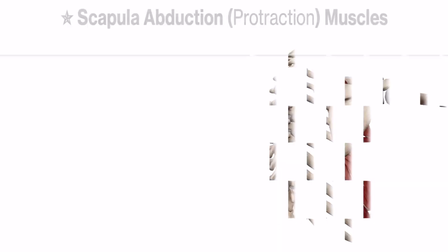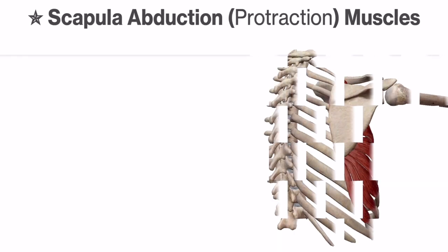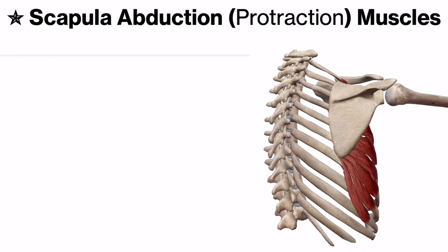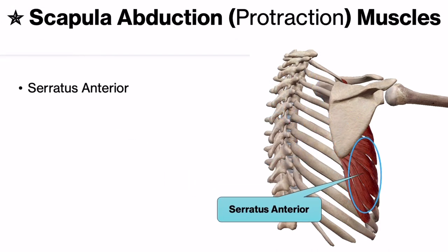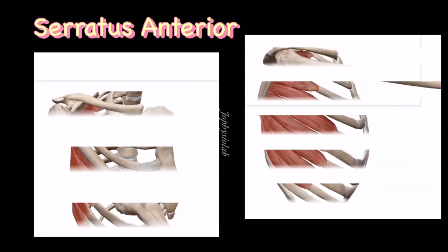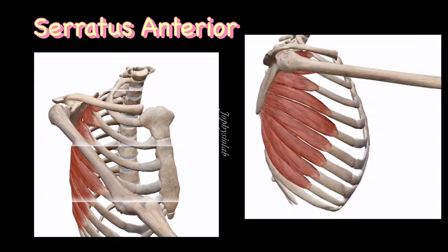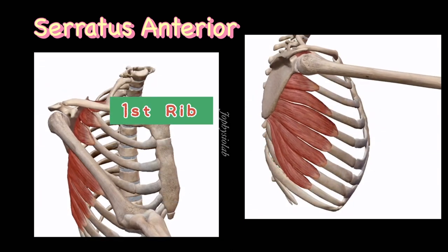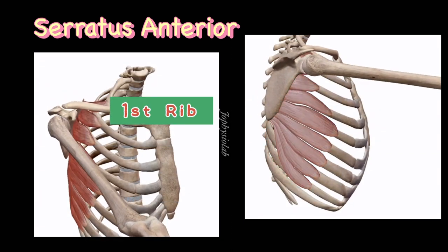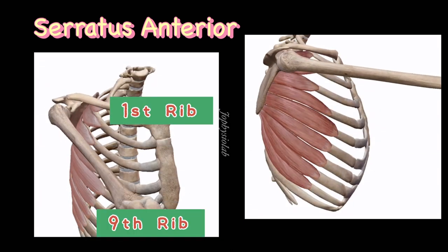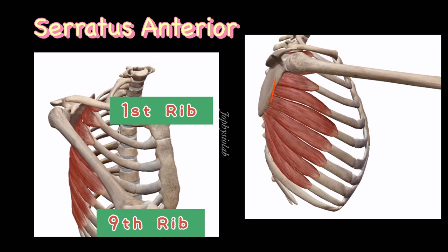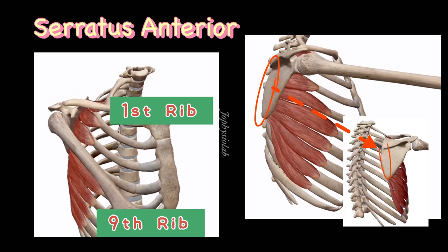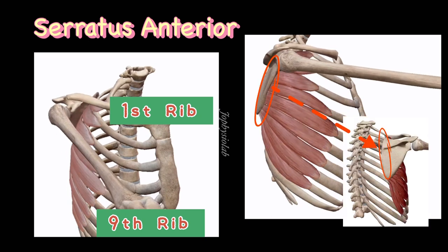The main muscle for scapula abduction is the serratus anterior. The serratus anterior muscle attachment starts from the first rib to the ninth rib, and it inserts at the medial border of the scapulae.